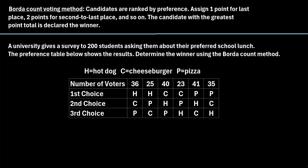In this video, we will talk about the Borda count voting method. Here's how this method works: if you have some type of election, candidates are ranked by preference. You assign one point for last place, two points for second to last place, and so on. The candidate with the greatest point total is declared the winner.